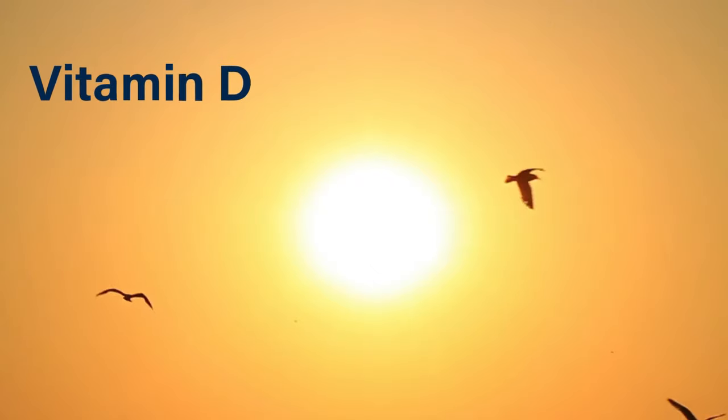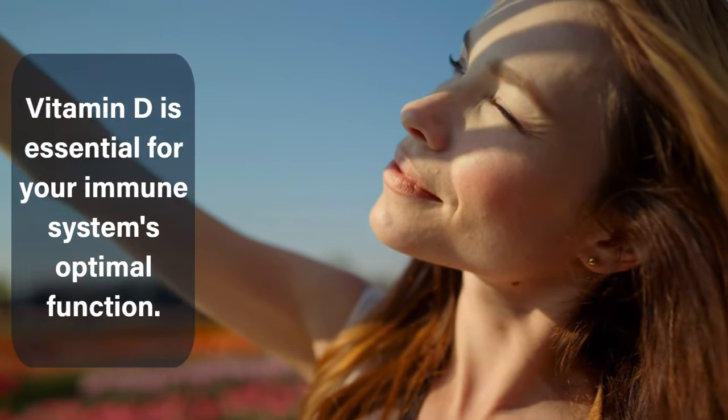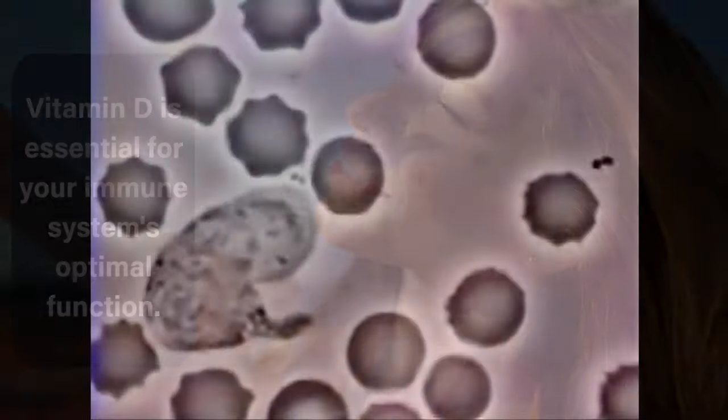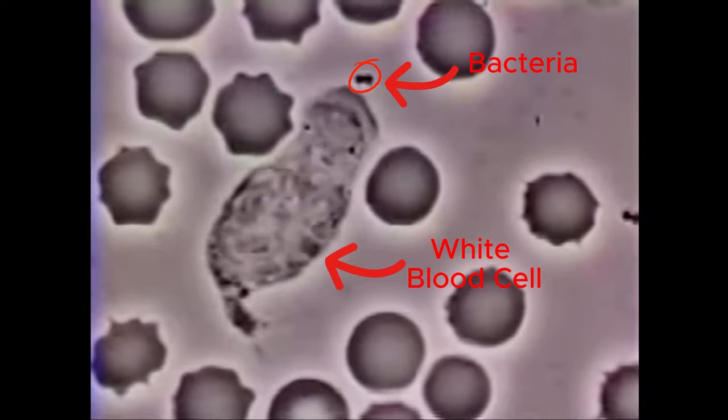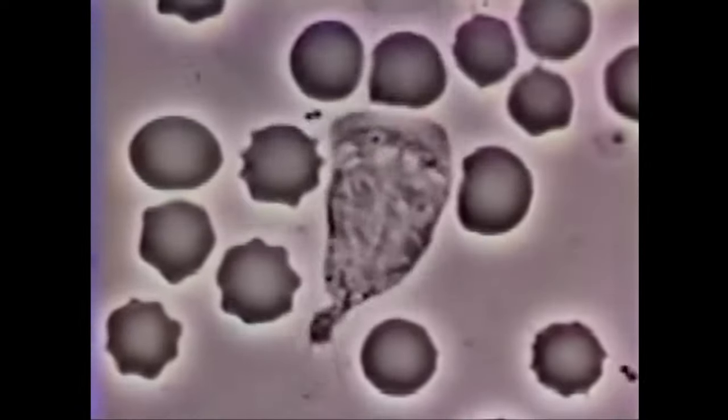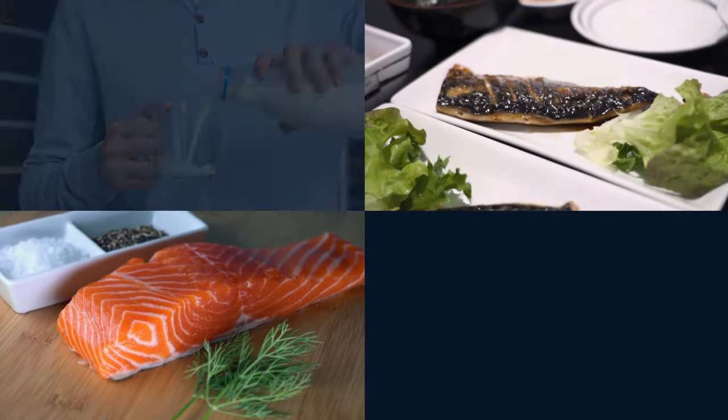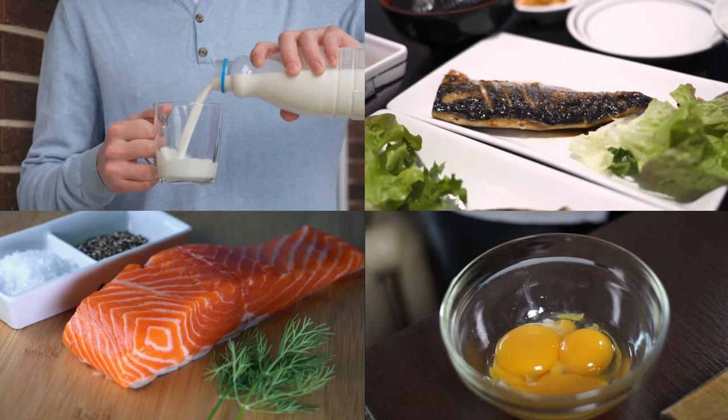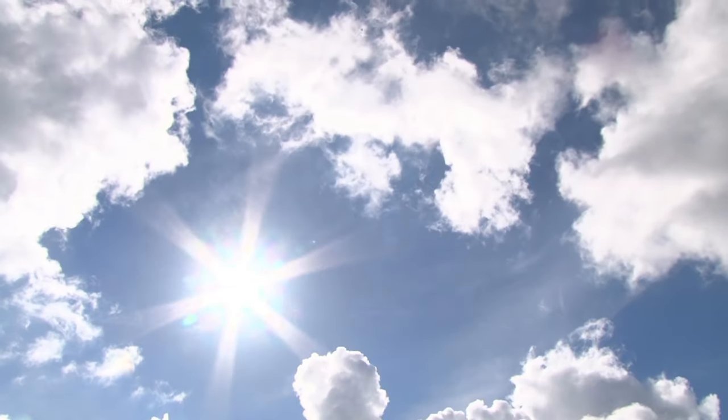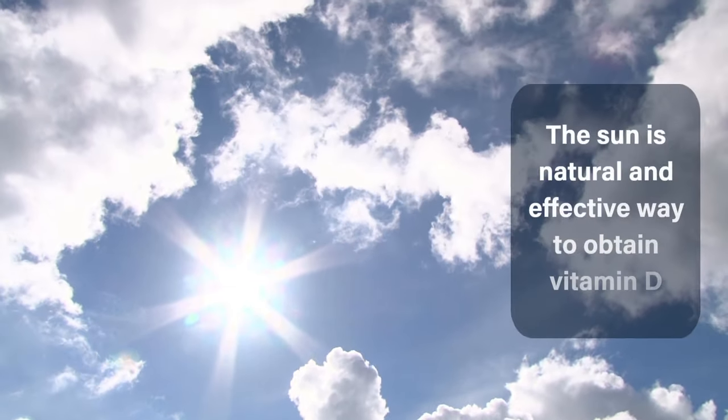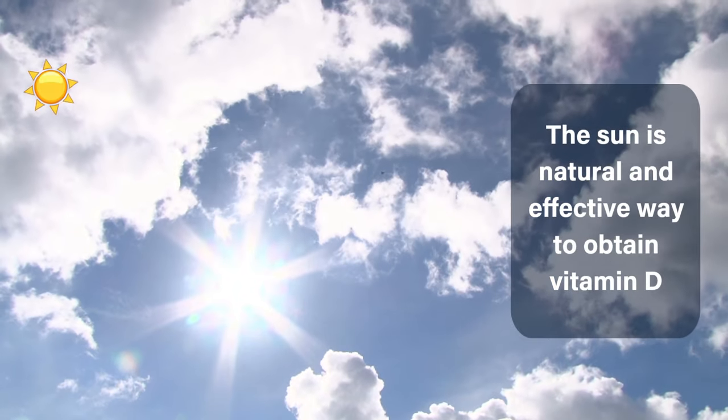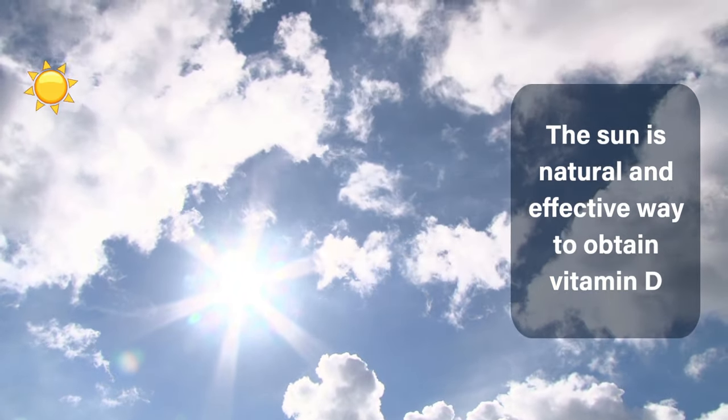Next up, we have vitamin D, known as the sunshine vitamin. Vitamin D is essential for your immune system's optimal function. It helps regulate the immune response, so your body can efficiently defend against infections without overreacting. Foods like fatty fish, salmon, mackerel, fortified milk, and egg yolks are good sources of vitamin D. However, if possible, consider opting for sunlight exposure, as it is a natural and effective way to obtain vitamin D.